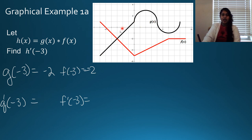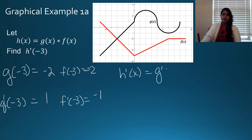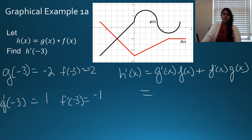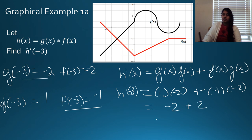For g, which is the graph in black, I figure out the slope of the line: up 1 over 1, so it's positive 1. For f, the slope is negative 1. So g prime of negative 3 equals 1 and f prime of negative 3 equals negative 1. h prime of x equals the derivative of the first times the second plus the derivative of the second times the first. So h prime of negative 3 equals g prime of negative 3 times f of negative 3 plus f prime of negative 3 times g of negative 3, which is 1 times negative 2 plus negative 1 times negative 2, giving negative 2 plus 2 equals 0.